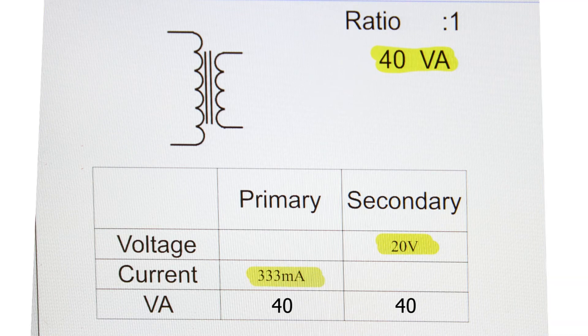40 volt amps on primary and secondary. 40 divided by 333 milliamps is 120 volts. If we have 20 on the secondary, that would be a 6 to 1 ratio. Take the 40 divided by 20 volts to get 2 amps of current on the secondary.